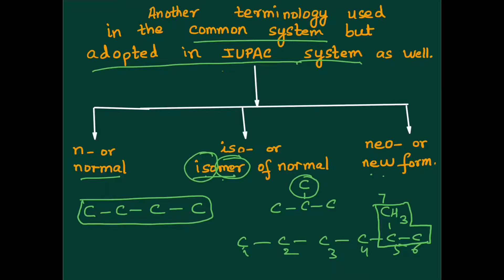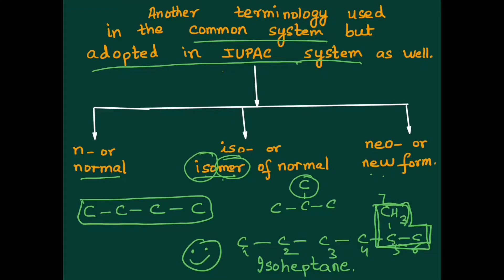A 7-carbon compound with a methyl branch at the second last carbon — according to the common system, I repeat, according to the common system — it would be named as iso-heptane. What would be its IUPAC name? For those of you who have done the IUPAC system, go ahead and name this compound.